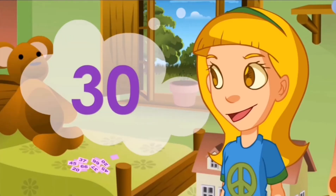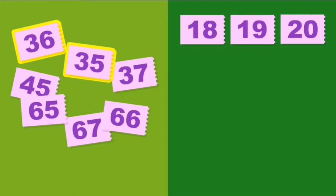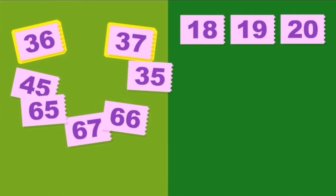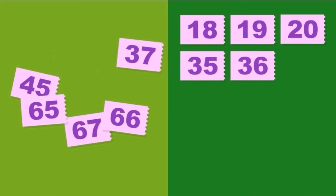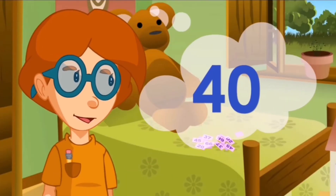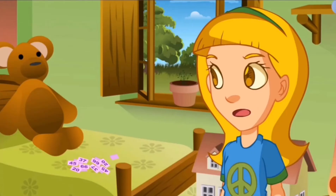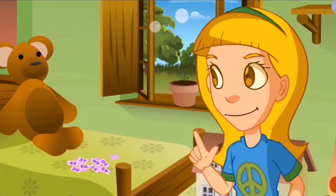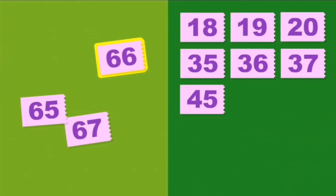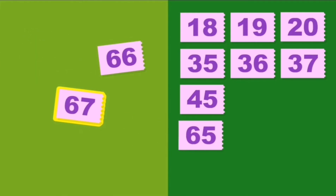Which would go next? The numbers starting with thirty. Thirty-six, thirty-five, and thirty-seven. I'll put them in order: thirty-five, thirty-six, and thirty-seven. Very good! Have you got any numbers starting with forty? Yes! I've got forty-five! I still have the ones starting with sixty, and I'll be done. You have sixty-six, sixty-five, and sixty-seven.